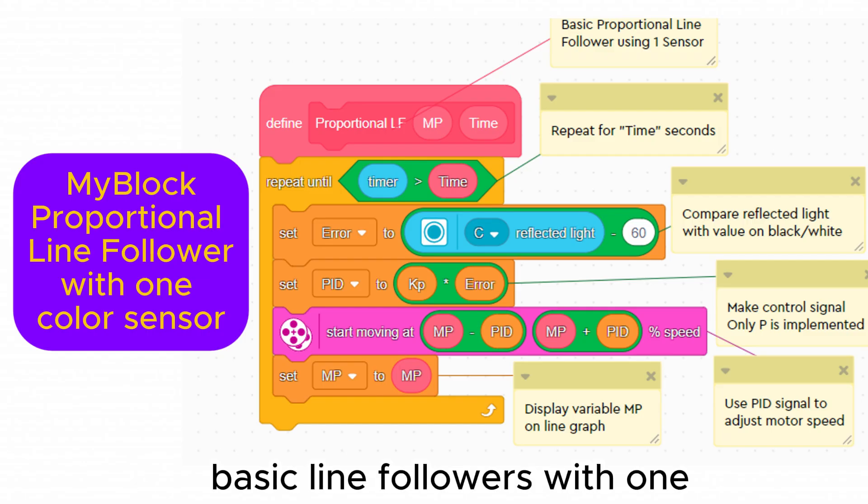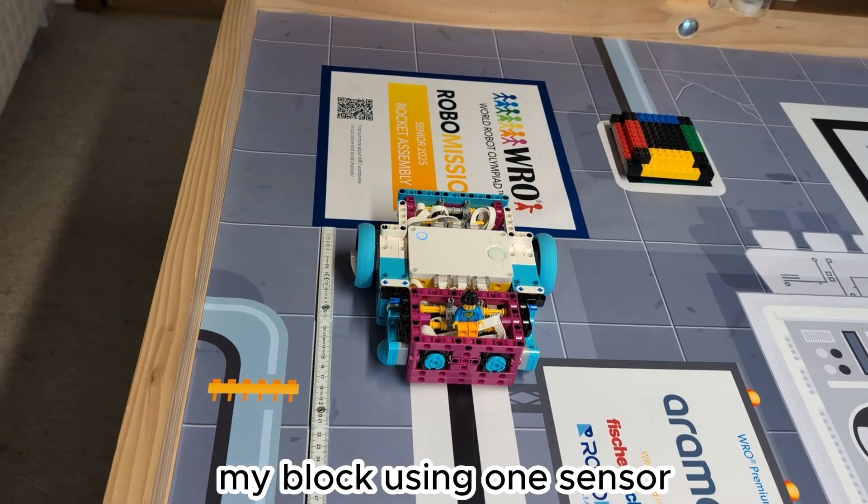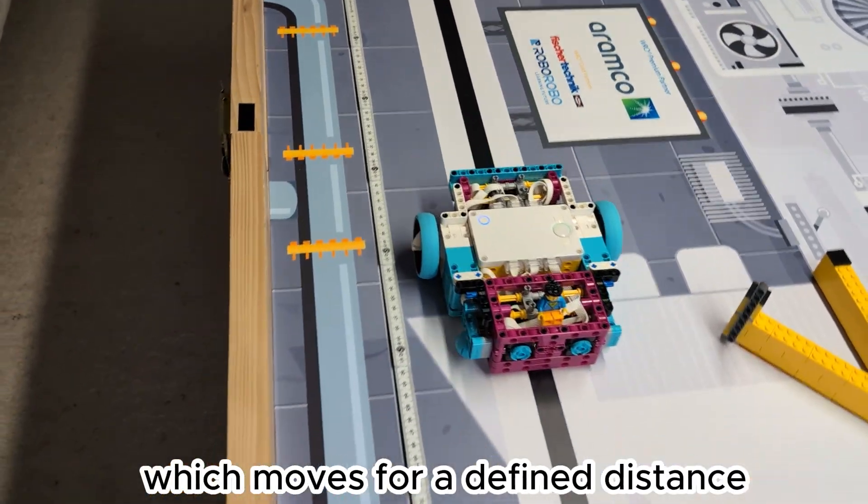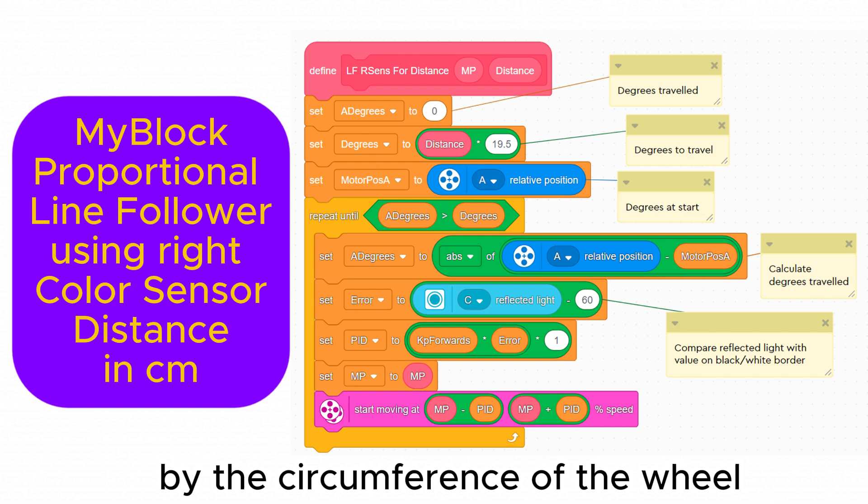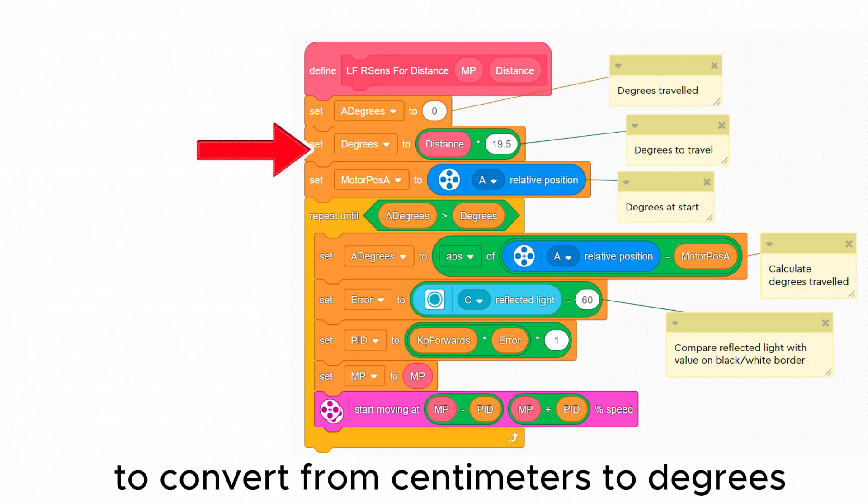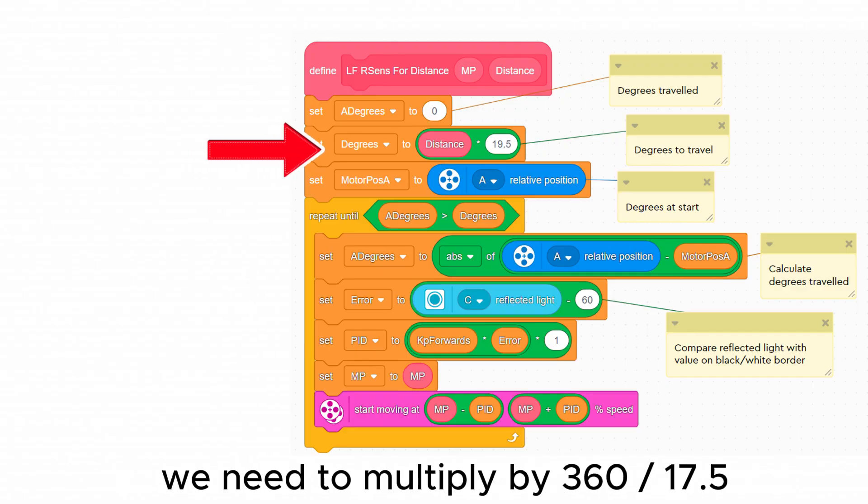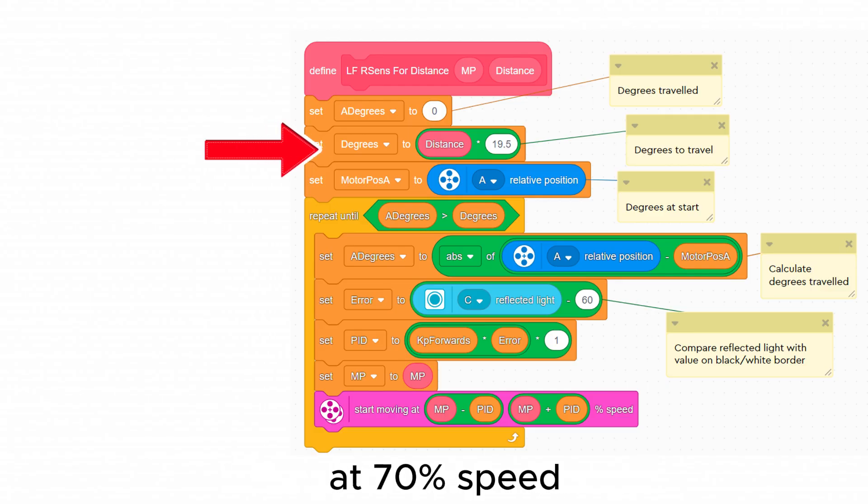Now we have made basic line followers with one and with two sensors let's make them more useful. I will make a line follower my block using one sensor which moves for a defined distance in centimeters. When the motor turns 360 degrees the robot moves by the circumference of the wheel which is 17.5 centimeters. To convert from centimeters to degrees we need to multiply it by 360 divided by 17.5 which is 20.57. I had to adjust this to 19.5 to give best accuracy at 70% speed.